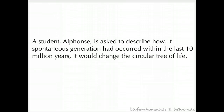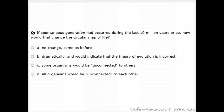Here's another example. A student, Alphonse, is asked to describe how, if spontaneous generation had occurred within the last 10 million years, it would change the circular tree of life. The exact question: "If spontaneous generation had occurred during the last 10 million years or so, how would that change the circular map of life?" A. No change, same as before. B. Dramatically, and would indicate that the theory of evolution is incorrect. C. Some organisms would be unconnected to others. And D. All organisms would be unconnected to each other.